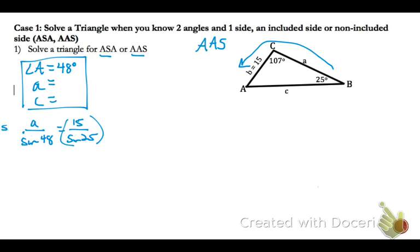To solve for A, multiply by the denominator on the right side. Take your calculator: take 15, divide by the sine of 25, press enter, then multiply by the sine of 48. Rounding to the ones place, side length A is 26.